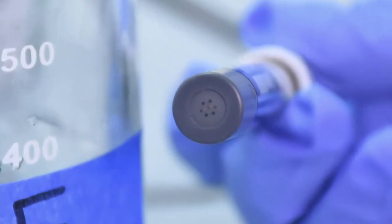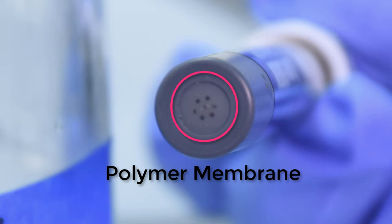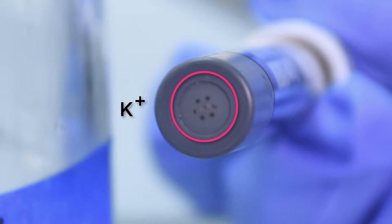The polymer membrane selects for the activity of one ion over another. For example, the electrode we will be using has a membrane selective for potassium ions.